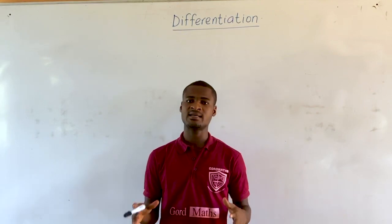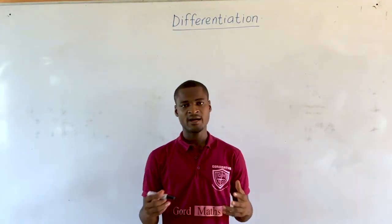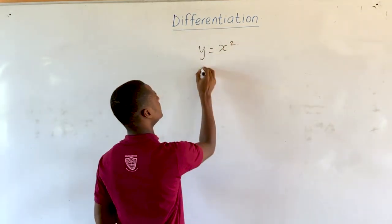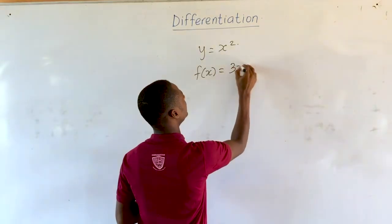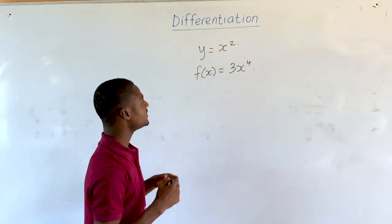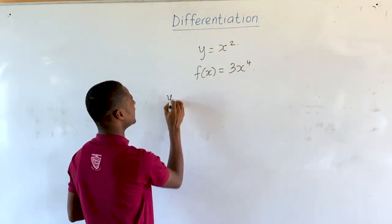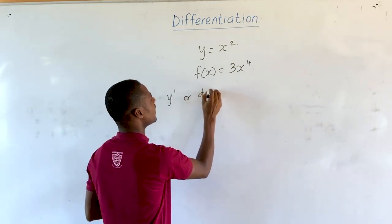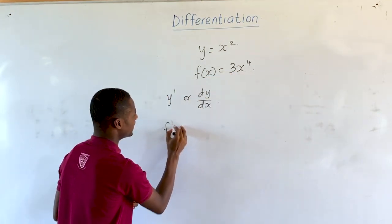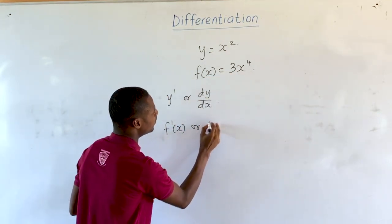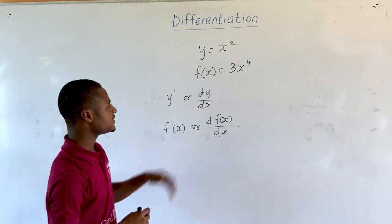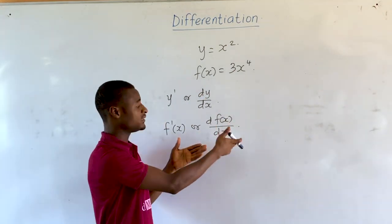In our previous lesson, we discussed the first principle of differentiation. If we have two different functions — y is equal to x raised to the power 2, and f of x is equal to 3x raised to the power 4 — these are functions in different notations. The derivative of y can be written as y prime or dy/dx, and the derivative of f of x can be written as f prime of x or df(x)/dx. So the derivative has different notations which all mean the same thing.